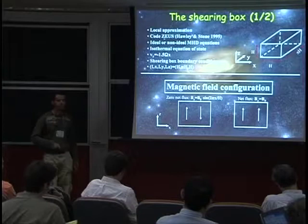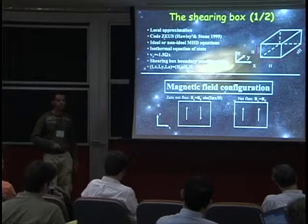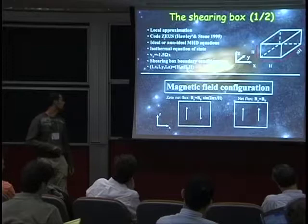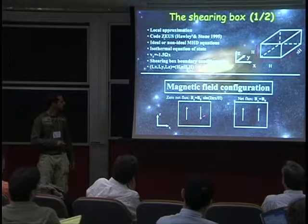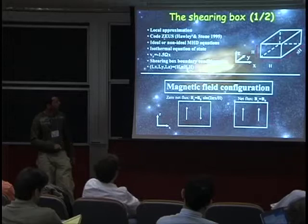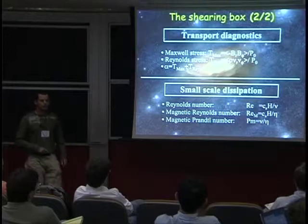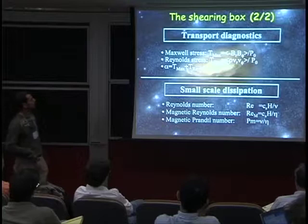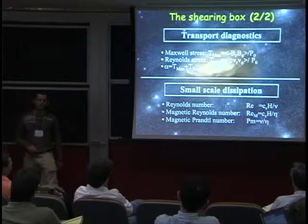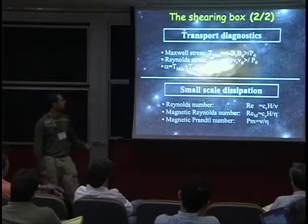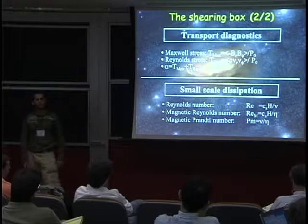I looked at two different field configurations, all of them starting with a vertical flux. The first is a zero net vertical field threading the box, which I will focus on the most, looking in the radial-vertical plane. The other configuration is a purely vertical field. I'll mostly look at transport diagnostics to figure out what's going on in the flow, and when needed I'll use explicit dissipation coefficients associated with a Reynolds number for viscosity and a magnetic Reynolds number for resistivity.